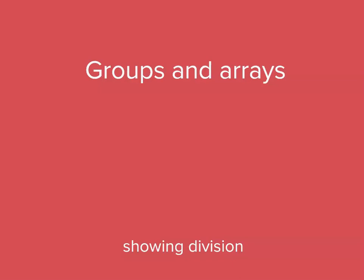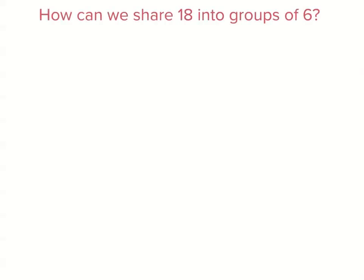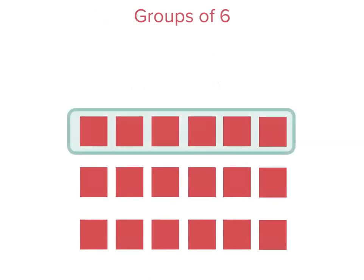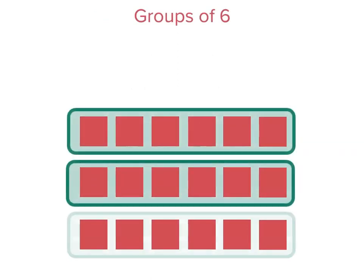We can see that groups and arrays help us with division as well. We can share 18 into groups of 6. So using an array with 18 pieces, we can actually share this into groups of 6. Each row has 6 pieces in it.